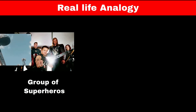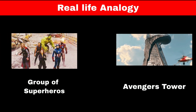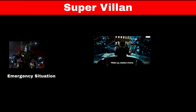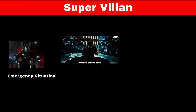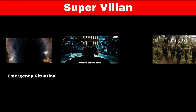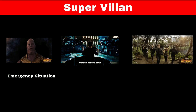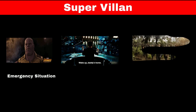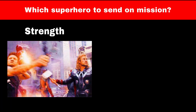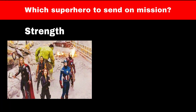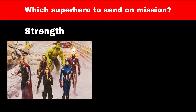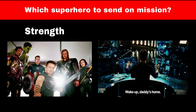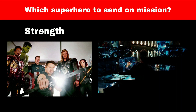Imagine the Avengers team, which is a team of superheroes who live in Avengers Tower. Whenever an emergency situation arises, Iron Man and Jarvis need to decide which superhero to send on the mission. Jarvis needs to know the strength and weakness of all the superheroes in order to decide, so he starts by mapping each superhero to their strength.